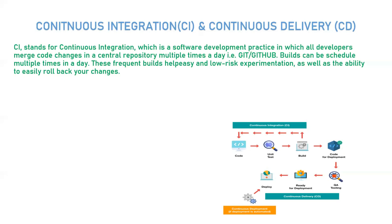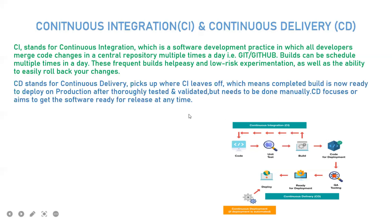These frequent builds help enable easy and low-risk experimentation as well as the ability to easily roll back changes. Since code merging is integrated with testing, it becomes easy to get feedback from automated testing tools incorporated in Jenkins — you can easily know what to roll back or what is causing the impact to the code. CD stands for continuous delivery, and it is the stage which picks up where CI leaves off — the completed build is now ready to deploy.